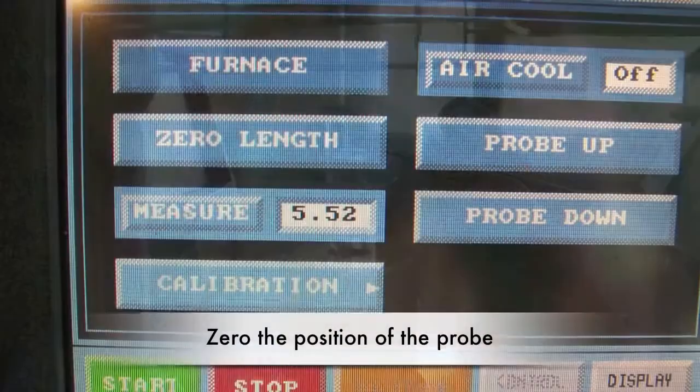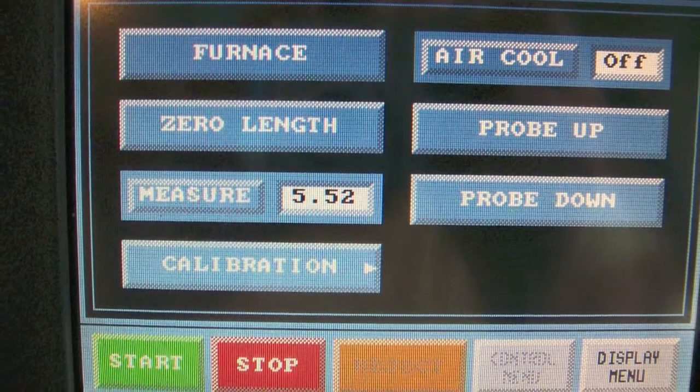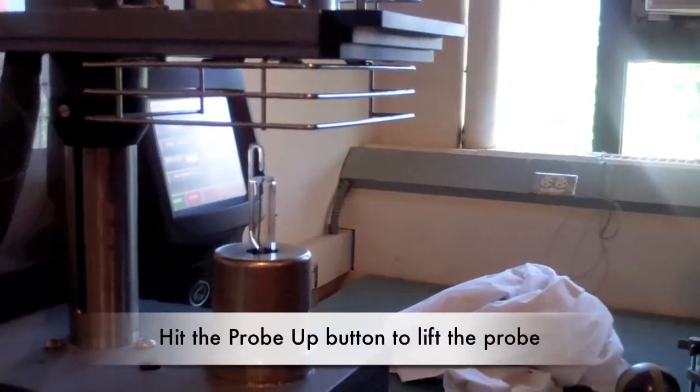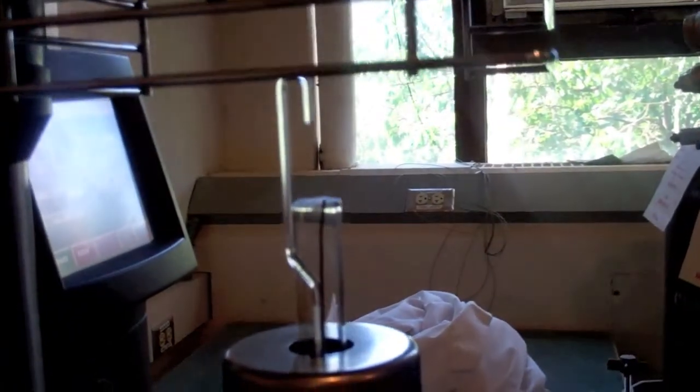First, zero the position of the probe by hitting the zero button on the control panel. The screen will say when the calibration is complete. Next, hit the probe up button to lift the probe. If more space is needed for the sample, hit the probe up button again.